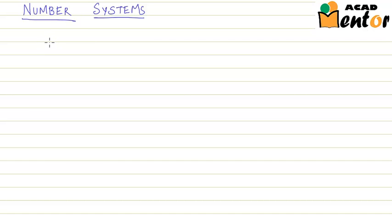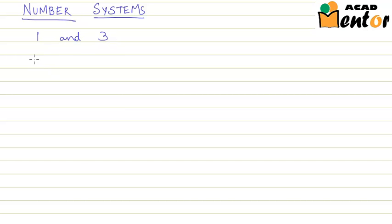Hi friends, welcome to the next video on number systems. In this video, we will figure out a few ways of finding 5 rational numbers, or more than one rational number, between two given numbers. For example, let's consider the numbers 1 and 3. If the question asks you to find 5 rational numbers between 1 and 3, there are 3 ways of going about it.